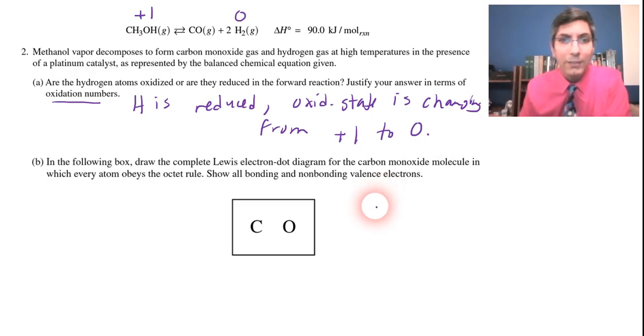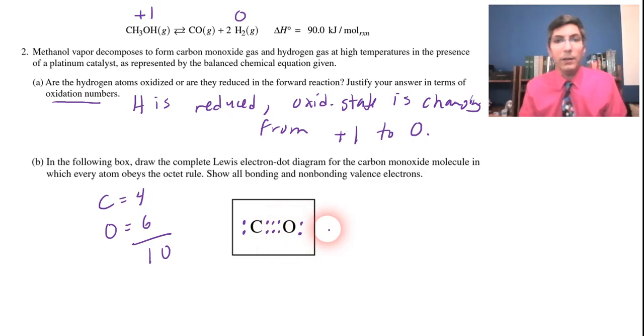Part B, we're being asked to complete the Lewis electron dot diagram for carbon monoxide. And we want to obey the octet rule. So carbon has four valence electrons, and oxygen provides six valence electrons. So you want to have 10 dots here. And really the best way to draw that so that we have 10 dots and everything obeys the octet rule is going to be something like this. You have to have that triple bond in there.